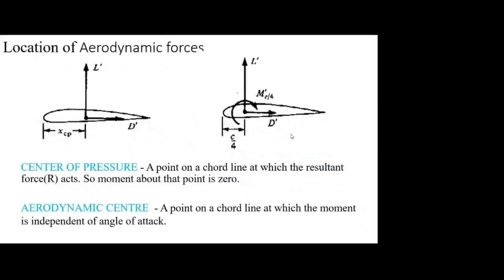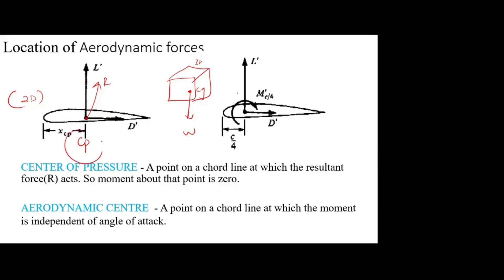The center of pressure is like center of gravity. You take an object - you know the total weight acts at the center of gravity point. For an airfoil, which is the 2D one, theoretically it has no weight at all. So you cannot mark the weight for the airfoil. The total force is acting at one point, and that point is called center of pressure. So center of gravity means total weight acts there, and center of pressure means total force acts on that point.